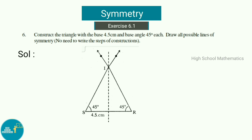The triangle formed is an isosceles triangle. The number of lines of symmetry for an isosceles triangle is one, so we have drawn the single line of symmetry for this figure.